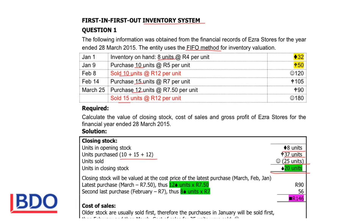The closing stock will be valued at the latest purchases. So you go to March and see how many were bought. The latest purchases were in March when you bought goods for R7.50. So 12 units purchased in March times R7.50 gives me R90. We've got 20 units left over and the last purchase had 12 units, so we still need 8 more units from the second last purchase at R7. So 8 times R7 gives R56, and that gives a total closing stock value of R145.